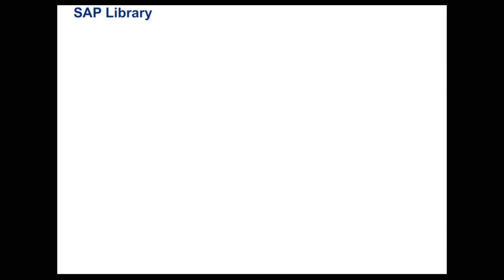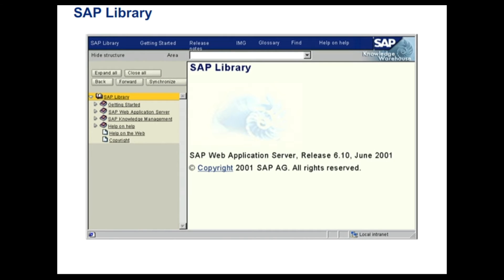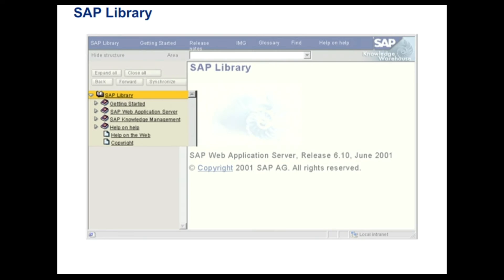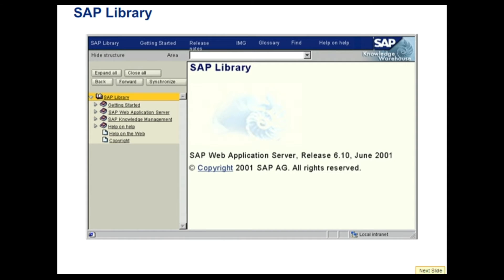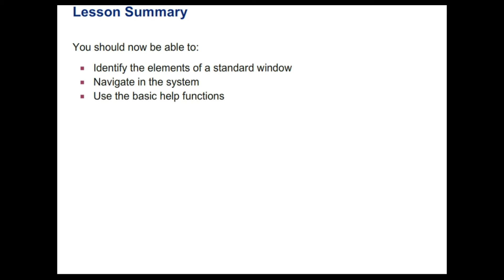The SAP library is a useful aid in getting to know the system functions. It allows you to access the online documentation. The online documentation also contains several tips and tricks to help you carry out common tasks easily and quickly. You should now be able to use various methods to call the SAP system functions and describe the standard menu's system and help. Let us proceed to the next lesson on getting help when you're ready.